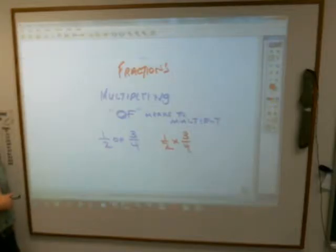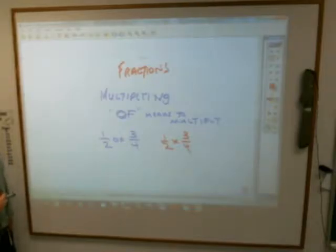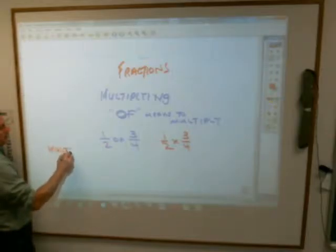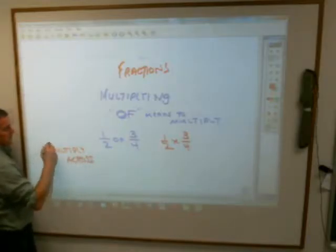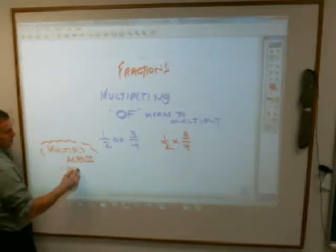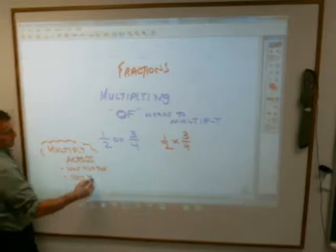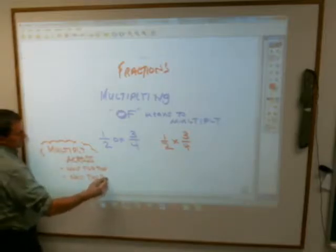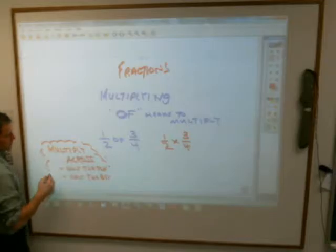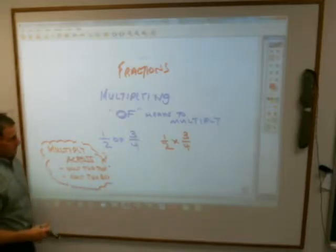The very simple rule of multiplying fractions together is we just say we multiply across. That means multiply the two top numbers — the numerators — together, and multiply the two bottom numbers together, and you'll get your new fraction. And then, of course, you need to reduce.